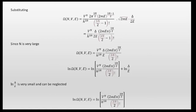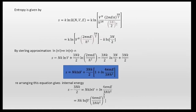So log Ω is given by log(V^N / h^(3n)) plus log of the remaining terms, plus log(delta/E). Since log(delta/E) is small it can be neglected. Therefore log Ω = log[ V^N / h^(3n) · (2mEπ)^(3n/2) / (3n/2)! ]. We then calculate entropy using Boltzmann's relation S = k log Ω, giving S = k log[ V^N / h^(3n) · (2mEπ)^(3n/2) / (3n/2)! ].